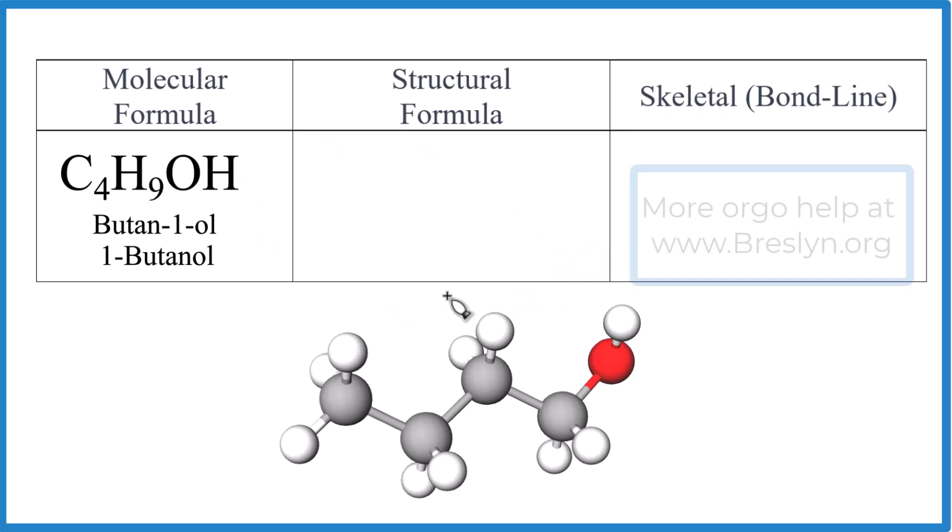If we look at this here, this is our model. We have C4H9OH - four carbons in a chain. We have four things attached to each carbon: one, two, three, four. This carbon has one, two, three, four attachments as well.